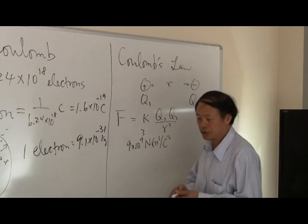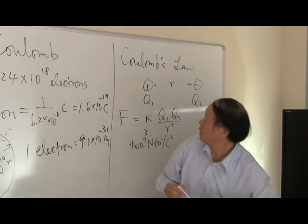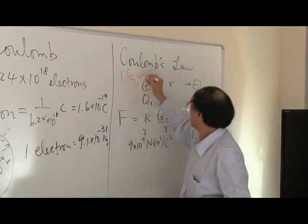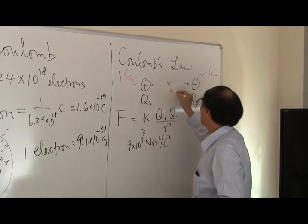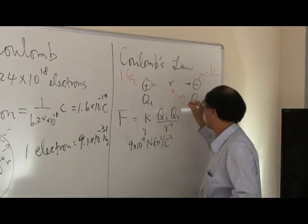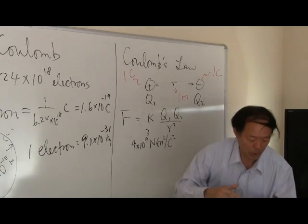So if we have this charge of Q1 equal to 1 coulomb, if this is equal to 1 coulomb, and this is also equal to 1 coulomb, and if D is equal to a distance of 1 meter, then what we have is that F would be equal to